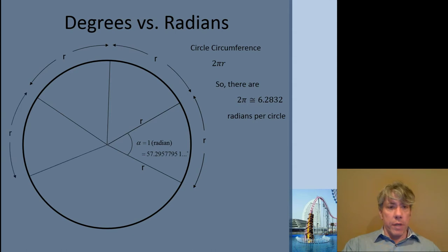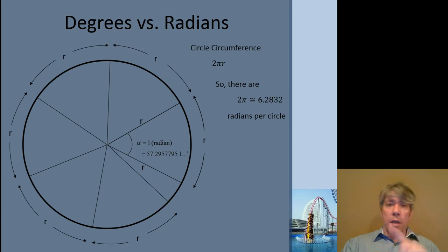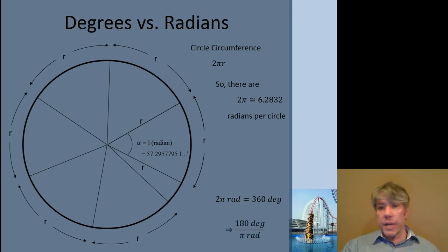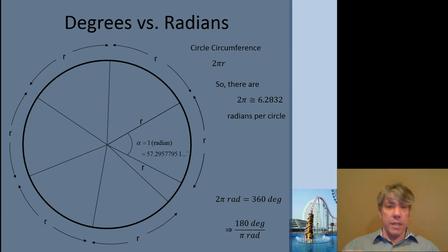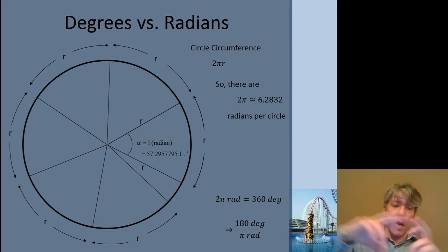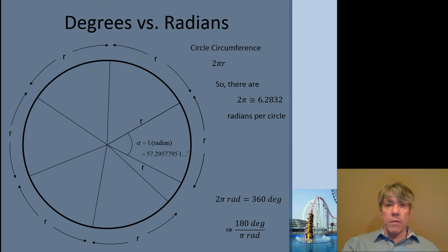If you add up all the arc lengths, you get 1, 2, 3, 4, 5, 6, with about 0.2832 remaining. 2π radians equals 360 degrees. The conversion factor is 180 degrees per π radians — be careful, it's not 180 degrees per radian. It's 180 degrees per π radians. Hopefully that makes sense because there are 2π radians, so π radians is one half of the circle.